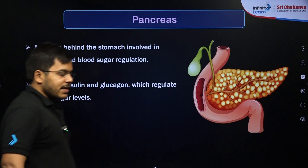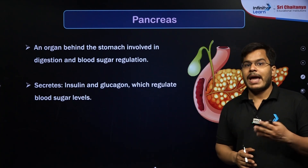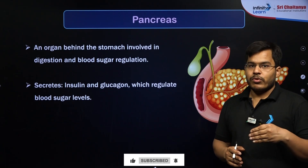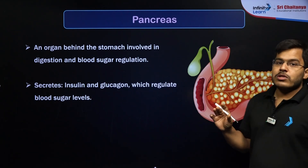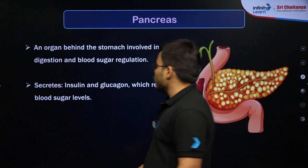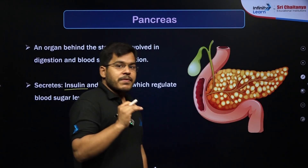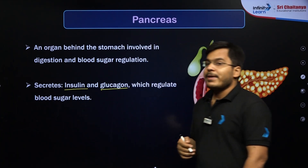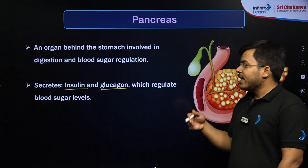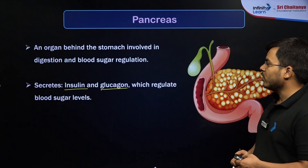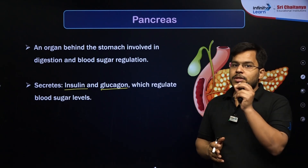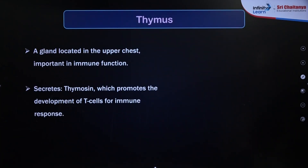The pancreas is a very different type of gland — it has two portions. The exocrine portion does not secrete hormones but secretes enzymes like trypsin, pancreatic amylase, and lipase that help in digestion. The endocrine portion releases hormones: insulin, which decreases blood glucose levels and prevents diabetes; glucagon, which increases blood glucose levels; and somatostatin, which regulates the release of both. The two most important hormones from the pancreas are insulin and glucagon, which together maintain blood sugar levels.